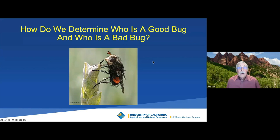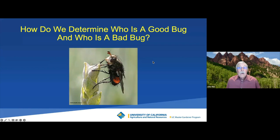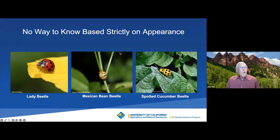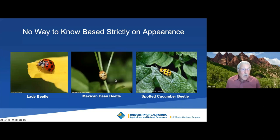But how do we determine who is a good bug and who is a bad bug? There's no real way to determine that strictly based on the way they look. Here we have three beetles that all have brightly colored, spotted elytra. If that was your criterion for goodness or badness, you would be wrong one or two thirds of the time — because one of these is a good one and two are bad ones.